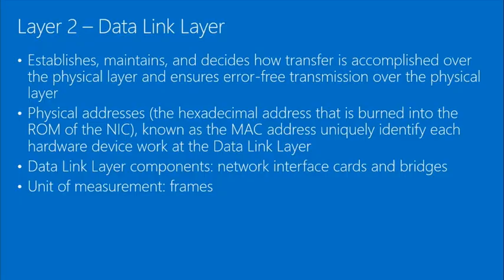Layer two, the data link layer, establishes, maintains, and decides how transfer is accomplished over the physical layer. What we're talking about are frame types — how content is encapsulated and put over the wire. MAC addresses, or media access control addresses, are defined at the data link layer. These are hexadecimal addresses assigned to a physical network card to uniquely identify those cards.